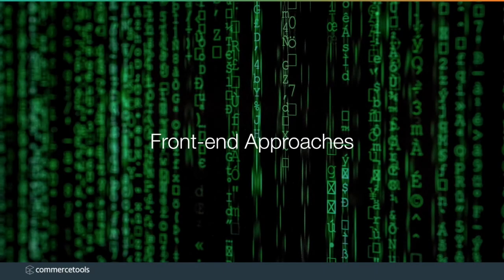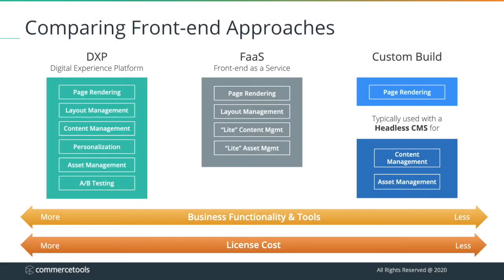Now let's take a look at the different front-end approaches. At a high level, there are three broad categories of front-end solutions. There's the digital experience platform, which has the richest set of functionality and business user tools — typically combining page rendering and layout management with powerful content management and personalization capabilities, and may include advanced features such as digital asset management and A-B testing. Front-end-as-a-service is a somewhat newer category providing page rendering, layout management, and some lightweight content management and possibly digital asset management. And then there's the custom build approach, having front-end developers build out your rendering layer using popular frameworks such as Node.js and React, or developing front-ends unique to different touchpoints.